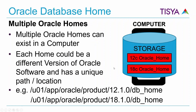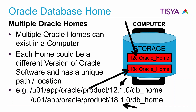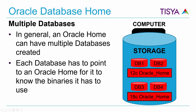In one computer, even for the database software, you could have multiple homes available. The typical use case is where you want to run different versions of Oracle's database on the same computer — you install the binaries first, each in their respective home, which could be a different directory within the same computer.